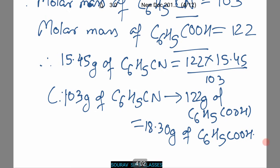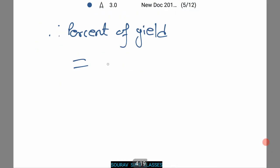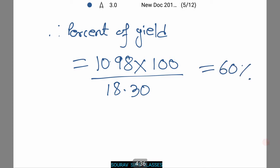Thus the actual yield is equal to 10.98 grams. Therefore we need to find the percentage yield that can be found as 10.98, which is the actual yield, times 100 for percentage, by 18.30, that is the supposed yield. This gives us 60 percent. Thus upon giving C6H5CN there is a 60 percent conversion rate.